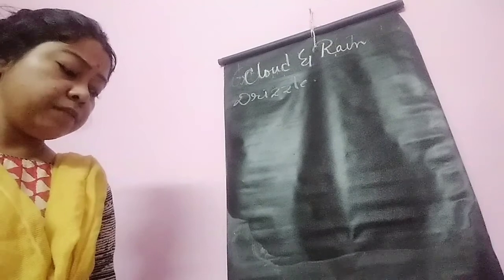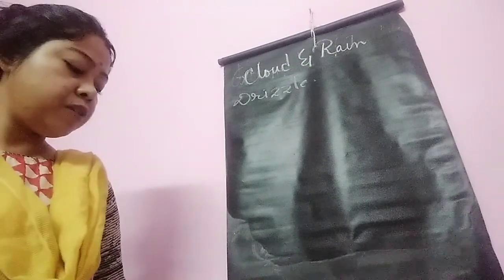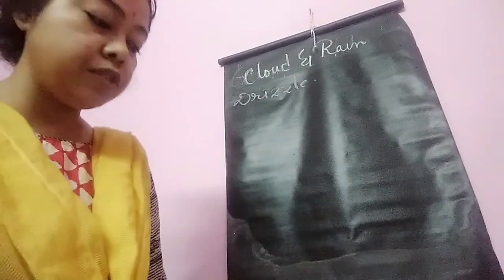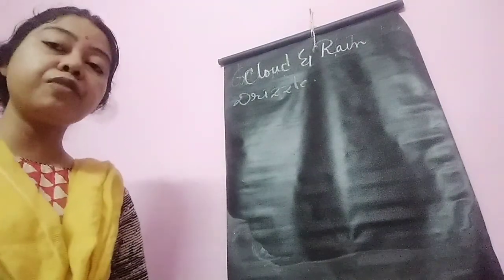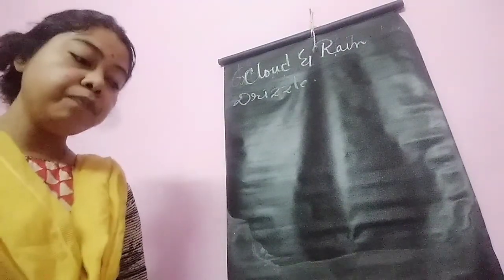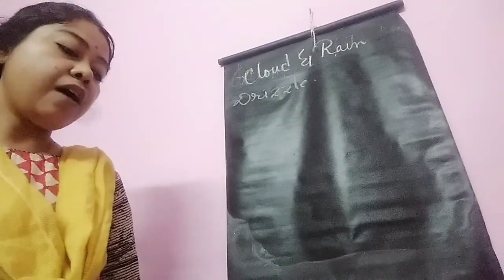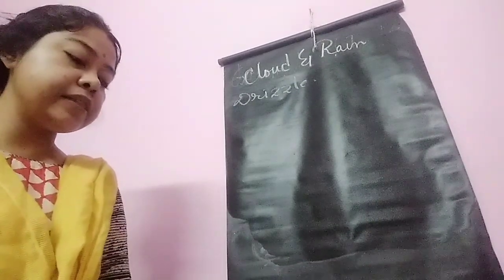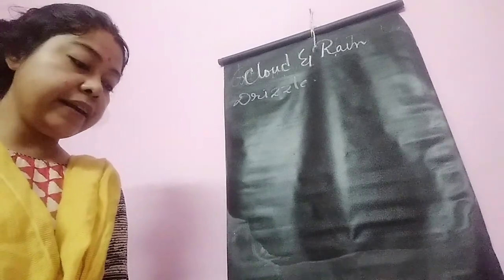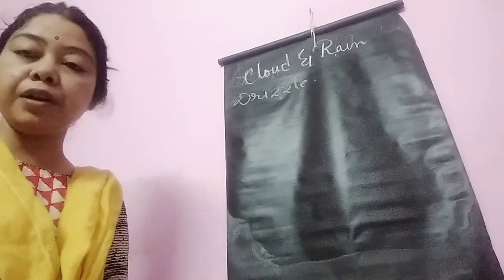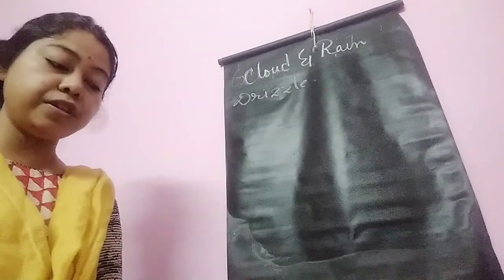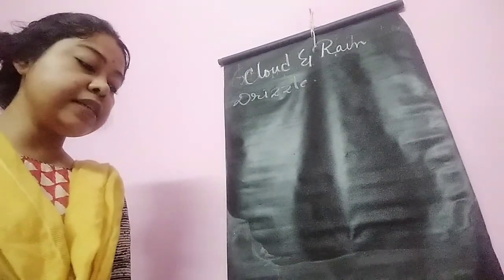Now what is snowfall? Snowfall occurs in the cold region, in the high mountainous part, when temperature falls below the freezing point in the upper atmosphere. The water vapor condenses directly into snow and falls down on the earth surface because of the gravitational force.